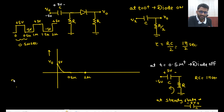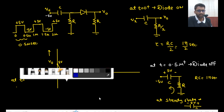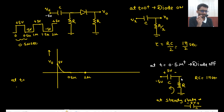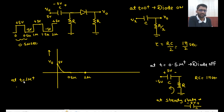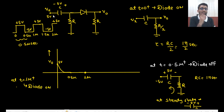Now our capacitor is charged in the opposite direction. Because if it is open-circuited, here you will have 0 and here minus 5, so it is charged to 5 volts in this direction. Now what will be the input — at T equals 1 microsecond plus, input will be 5 volts again. So 5 plus 5 equals 10 volts will come and diode will turn on. At T equals 1 microsecond plus, diode will turn on and 10 volts will come — so Vout will be 10 volts.